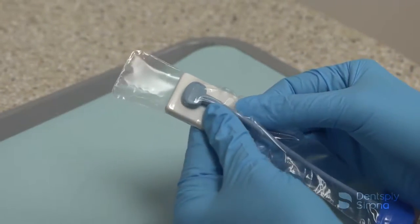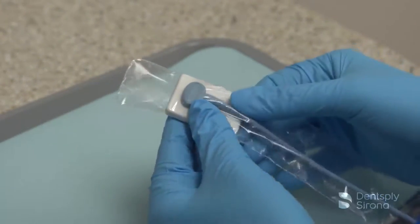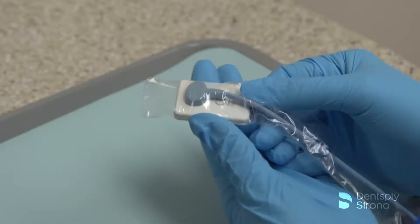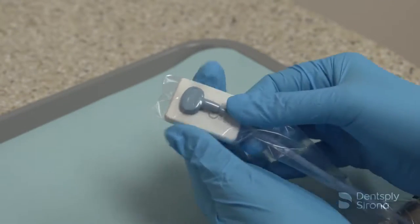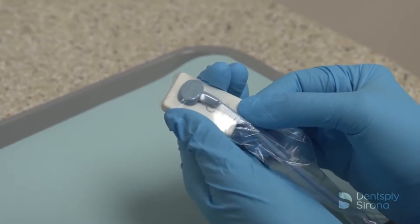When you reach the tight part of the sensor cover, hold the sensor at the bottom with one hand. With the other hand, move the sides of the cover down over the sensor. Do not push or pull on the cord to place the sensor into the sensor cover.